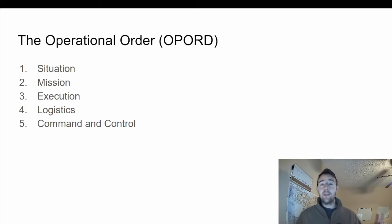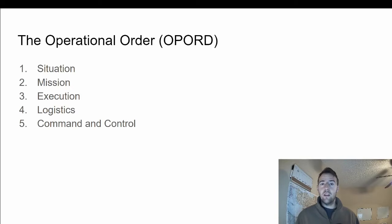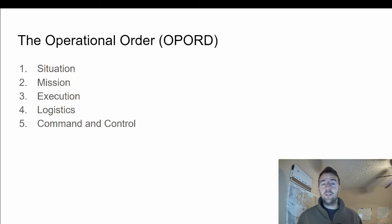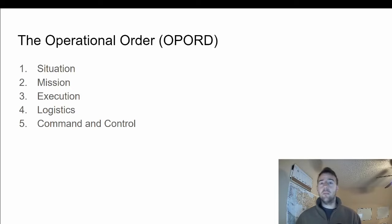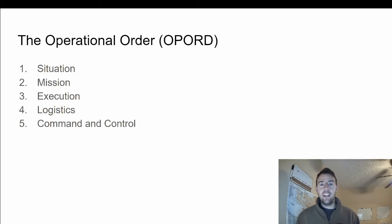So that concludes our discussion for today. I went over the operational order and the five steps in order to apply them to Dungeons & Dragons and see if we can make a better big bad evil guy. The steps were to define the situation and mission, go over the details of how that mission is going to be executed, and then we talked about the importance of logistics and command and control. I really appreciate you guys listening — I hope you enjoyed this video, and I'll talk to you soon.